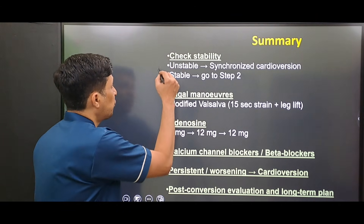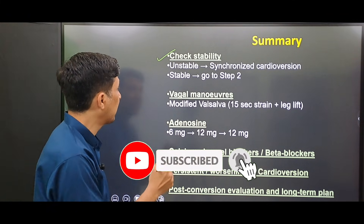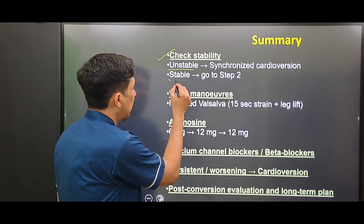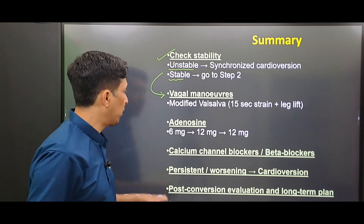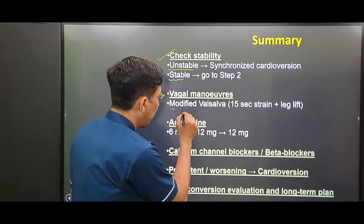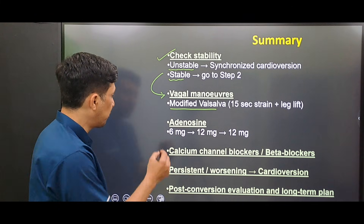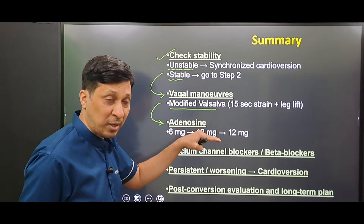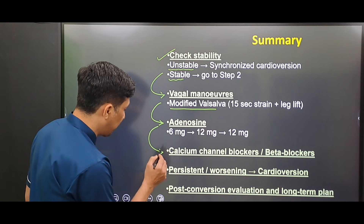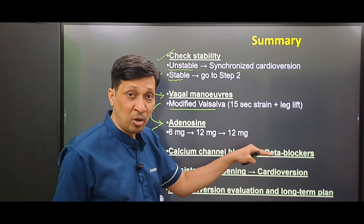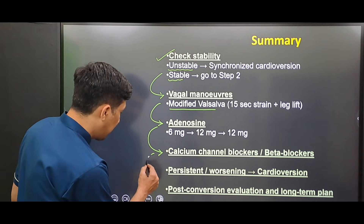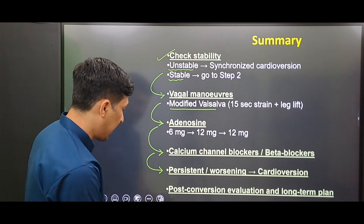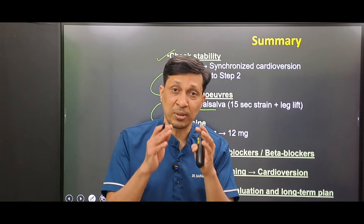In summary: first check the hemodynamic stability of the patient. If unstable, go for synchronized cardioversion. If stable, follow three steps — first, modified Valsalva maneuvers; if unsuccessful, adenosine in three doses (6 mg, then 12 mg, then 12 mg); if still unsuccessful, second-line drugs like calcium channel blockers or beta blockers. If the SVT is persistent or worsening, proceed to cardioversion. Finally, perform post-conversion evaluation and do long-term planning.